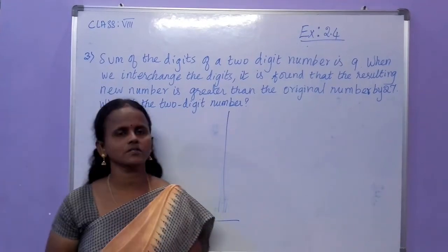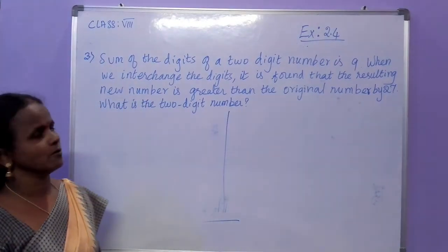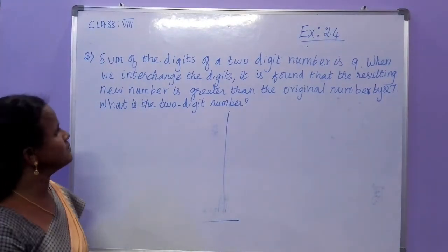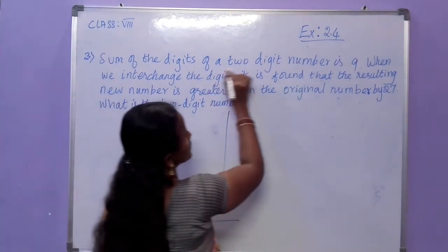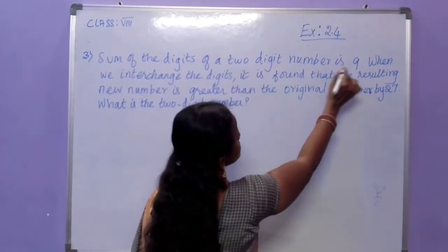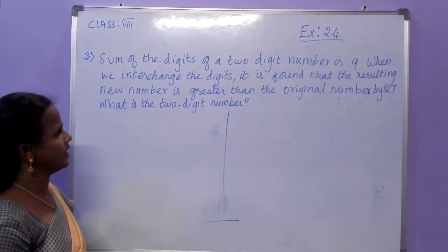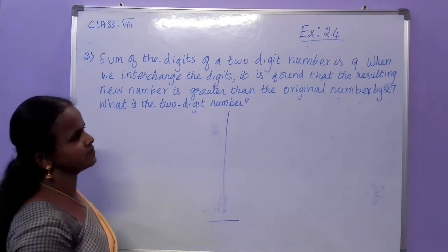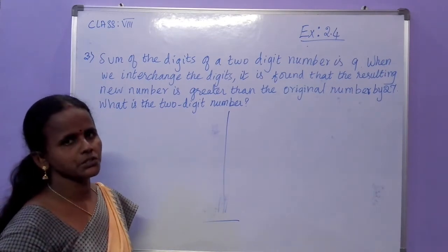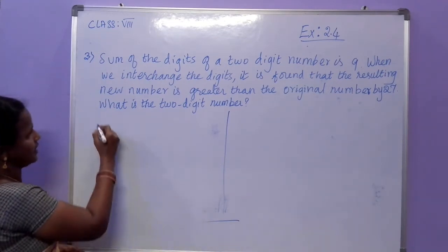We are going to see the third sum now. The sum of the digits of a two-digit number is 9.